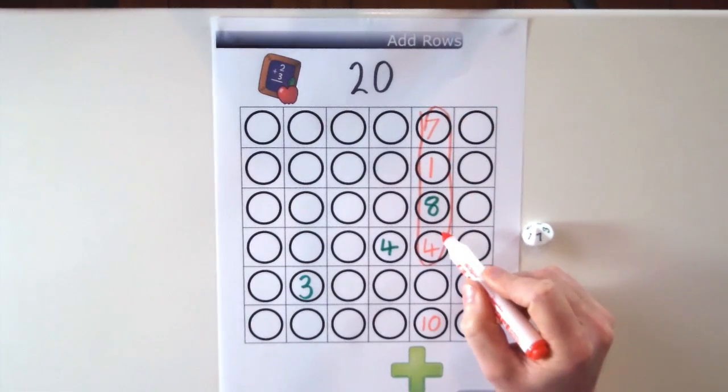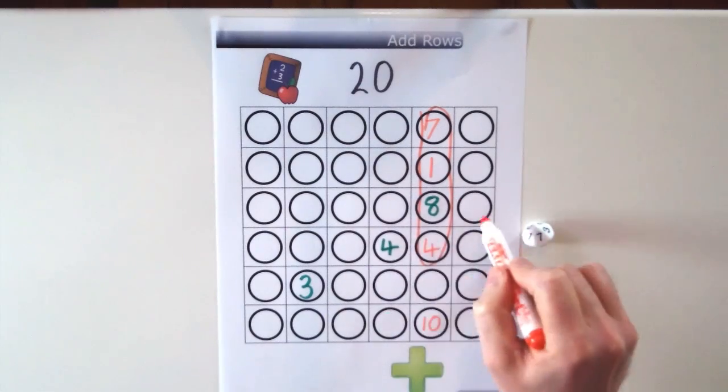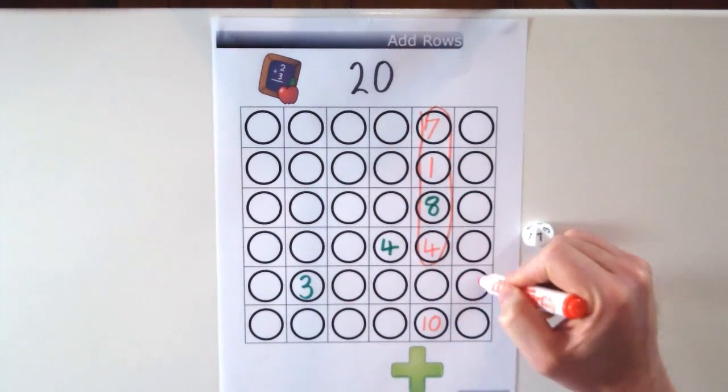Now players can circle rows of numbers vertically like this, horizontally and also diagonally in any direction.